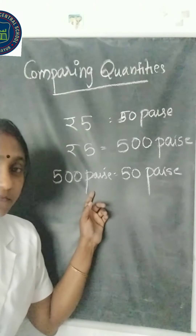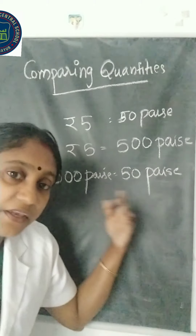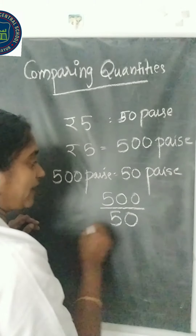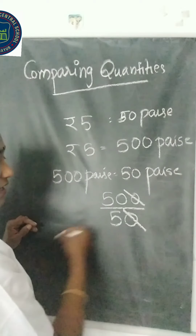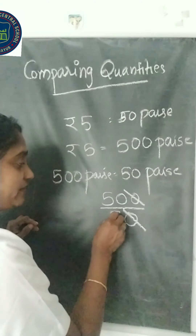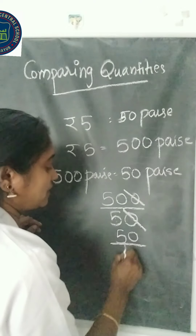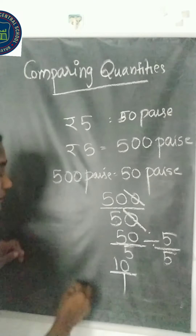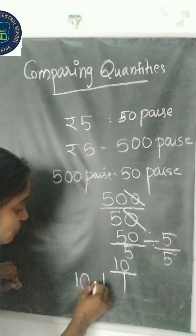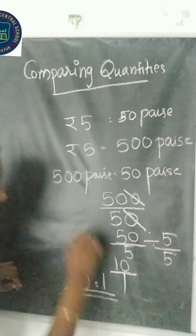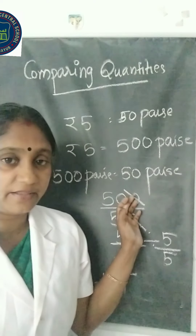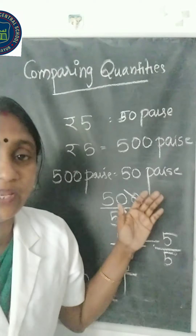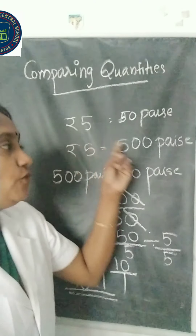First we convert to fraction form, then we divide. That is 500 divided by 50. When we cancel, we get 50 by 5, and dividing again by 5 gives us 10 by 1. Therefore the required ratio is 10 is to 1. From this we can confirm that we can compare two things only if they have the same unit — that is why we converted rupees 5 to 500 paise.